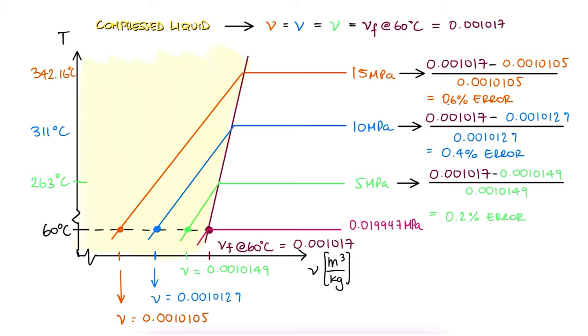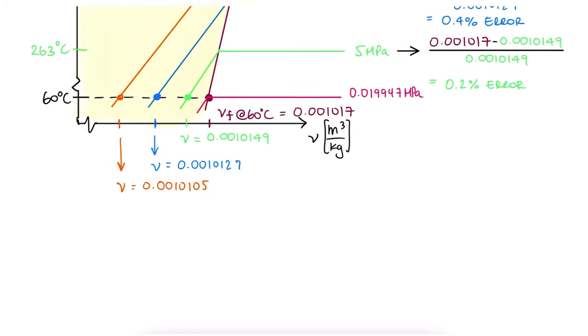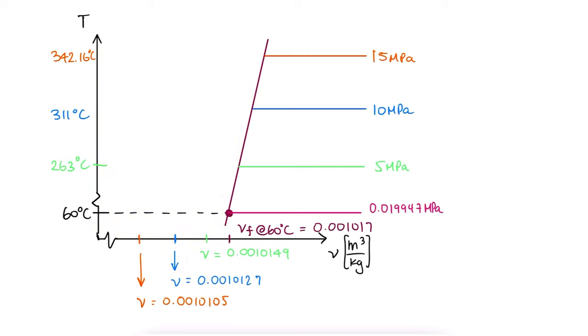Graphically, what this means is what we had already established initially when looking at these diagrams. The pressure lines in the compressed liquid region are almost parallel to the saturated liquid boundary, at least for low temperatures.